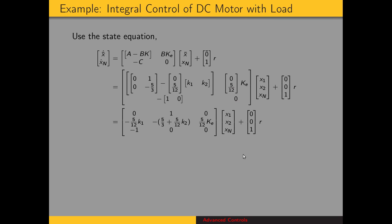Let's revisit the DC motor example where we wanted to control it to get 20% overshoot and 0.55 second settling time. Now we're going to add integral control to eliminate the steady state error. Here is the state equation again. We have A from the original state equation minus B times K — that's the submatrix A minus BK. Then we have B times ke, negative C, and 0. The values A, B, and C come from the original system's state equation.